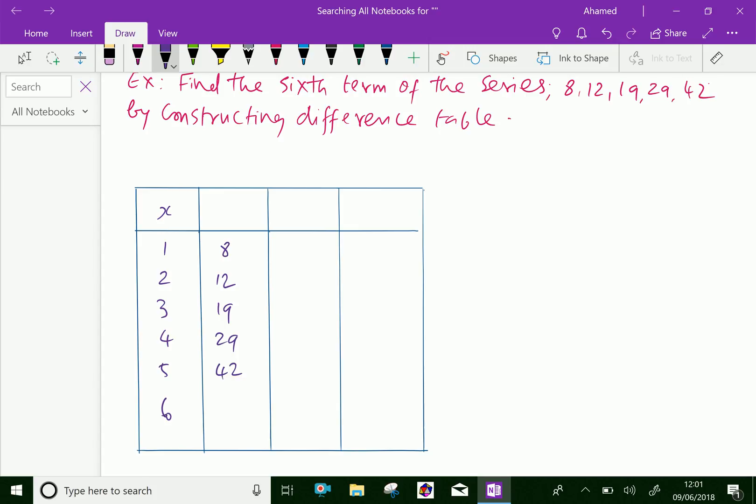We have to find the sixth value of y, that is f(x). Now let us find the first difference, delta f(x). Here, the second minus first, that is 12 minus 8 is 4, 19 minus 12 is 7, 29 minus 19 is 10, and 42 minus 29 is 13.